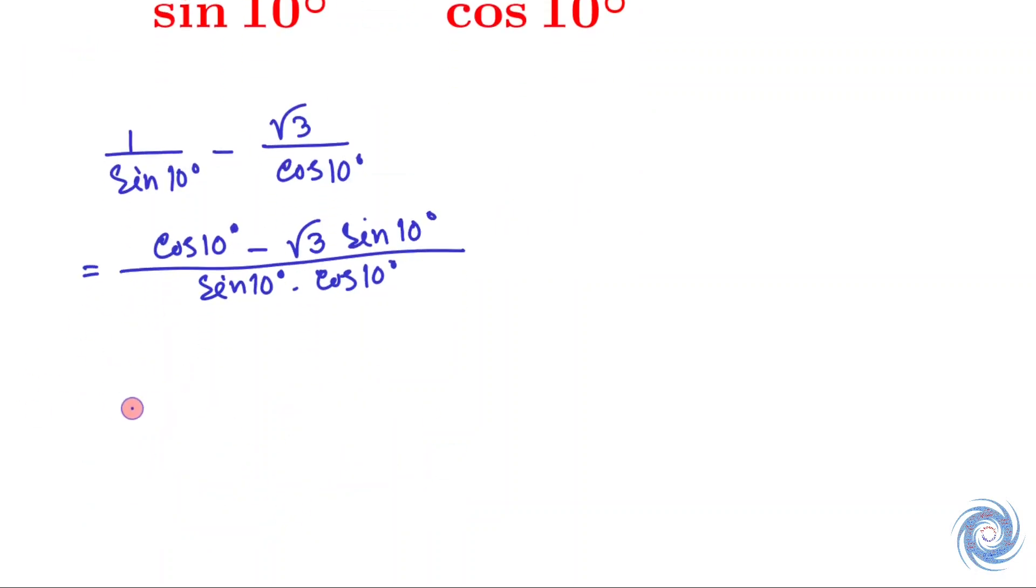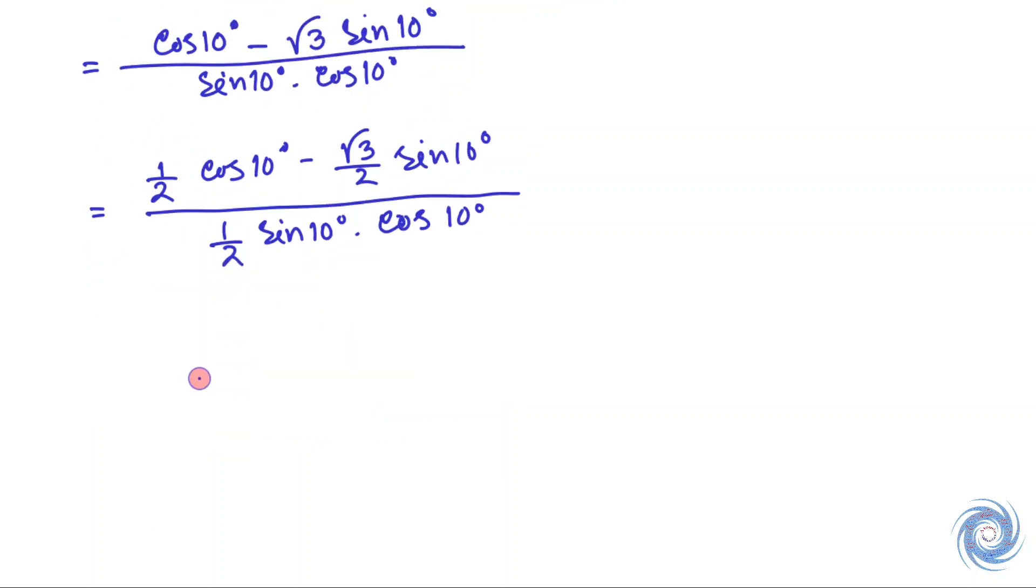This can be written as, let us multiply the numerator and denominator by half. We know that sine 30 equals half and cos 30 equals root 3 over 2. So this gives...